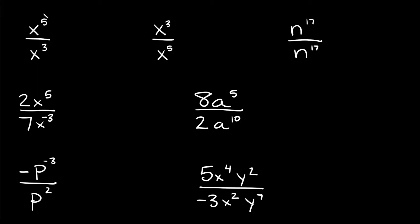Starting up here on the top left, we have x to the fifth power over x to the third power. So whenever you have the same base — we have an x in this case — this is actually pretty easy. All you're going to do: you have an x here, you have an x here, so you just keep the x and then you subtract the exponents. You always write the one that's on top first, so 5, and then you subtract the bottom one, so minus 3. So 5 minus 3 is 2, so here we're going to have x to the second power.